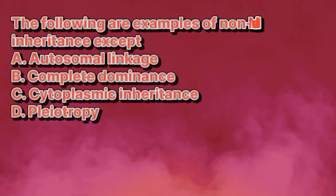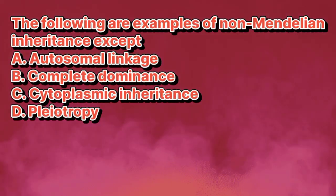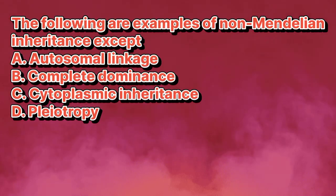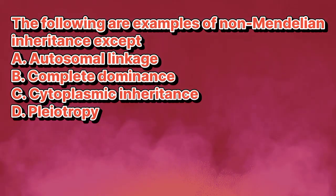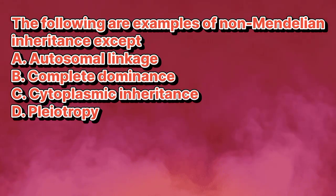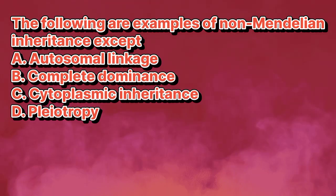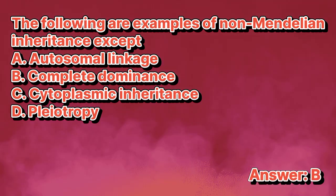The following are examples of non-Mendelian inheritance, except: A. Autosomal linkage. B. Complete dominance. C. Cytoplasmic inheritance. D. Pleiotropy. The answer is letter B.